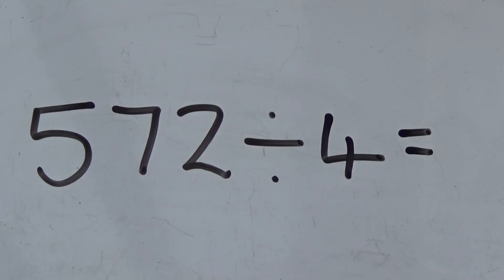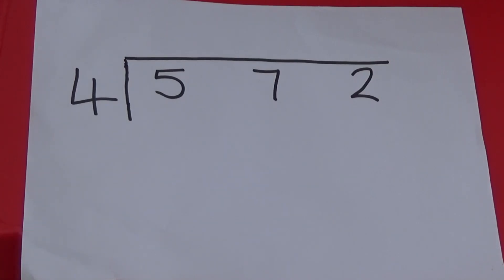This time I am going to show you a question with exchanging. I am going to look at 572 divided by 4. As before I have written the 572 inside the bus stop and 4 on the outside. Next, I need to use place value counters to make 572.